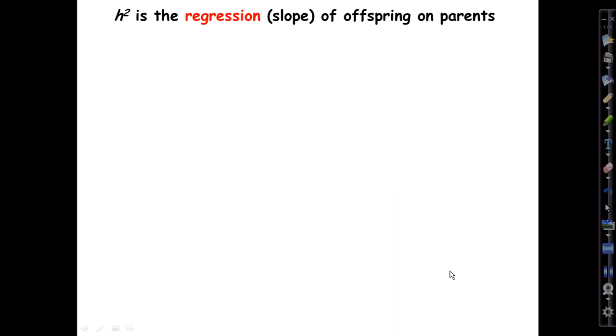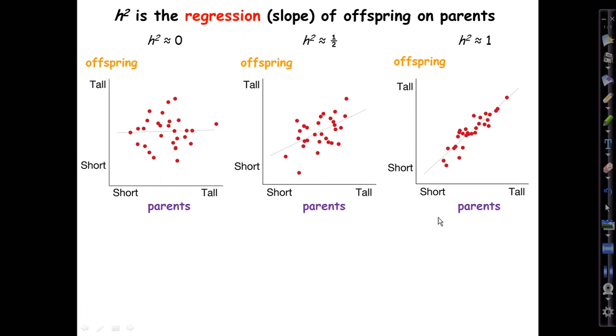So, how can we estimate little h²? Well, the easy way is to notice that it is the regression, that is the slope, of offspring phenotypic values on parental values. These textbook illustrations show if we make a scatterplot of offspring traits on the y-axis and parents on the x-axis with a very shallow regression slope, that's heritability quite small, near zero. This would be a moderate heritability. And then a very high heritability approaching one would look like this, where most of the variation in the offspring can be explained by variation in their parents.